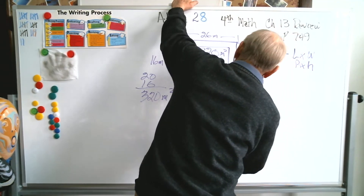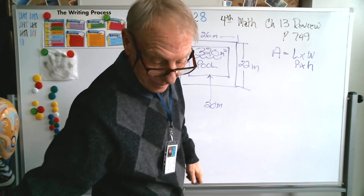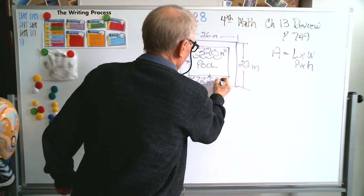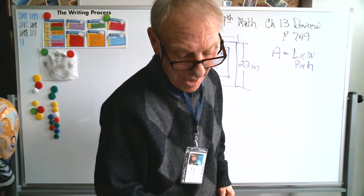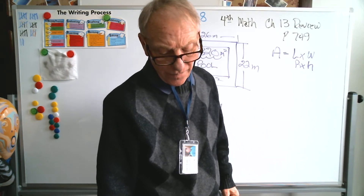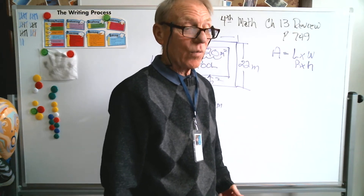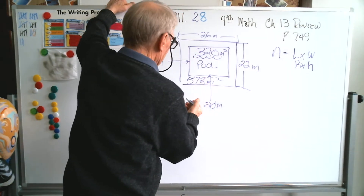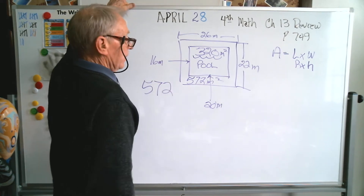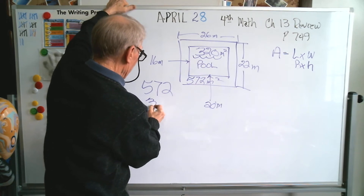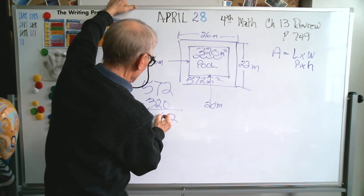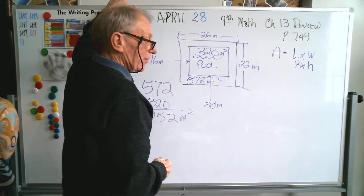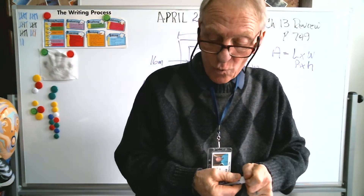Is there another part to this problem? We know 572 is the whole area. Part B: how many square meters of tile will Marco need for the walkway? So now they want to know the area of the walkway around the pool. We know the total area is 572 square meters and the pool is 320. Subtract that: 572 minus 320 equals 252 square meters. So the walkway around the pool is 252 square meters.